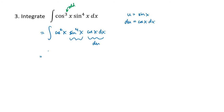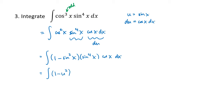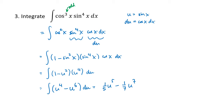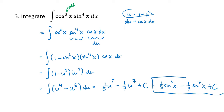Sine to the fourth is already in terms of sine of x, so I need to rewrite cosine squared. Using the Pythagorean identity, cosine squared of x is one minus sine squared of x, times sine to the fourth, times cosine of x dx, which turns into du. When I do my substitution, I get one minus u squared times u to the fourth du. Distributing, I get u to the fourth minus u to the sixth. Taking the antiderivative gives one-fifth u to the fifth minus one-seventh u to the seventh plus c. Substituting back, that's one-fifth sine to the fifth of x minus one-seventh sine to the seventh of x plus c.